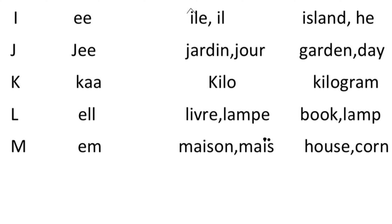I will start with I. The pronunciation of I in French is 'ee'. Example in French: île (island), il (he). Next is J — the pronunciation is like 'zh'. Example: jardin (garden), jour (day).